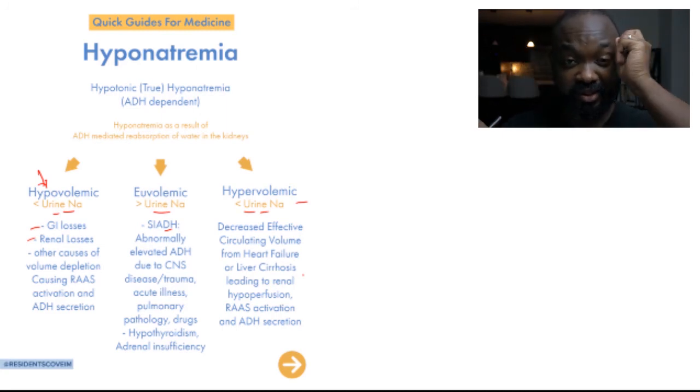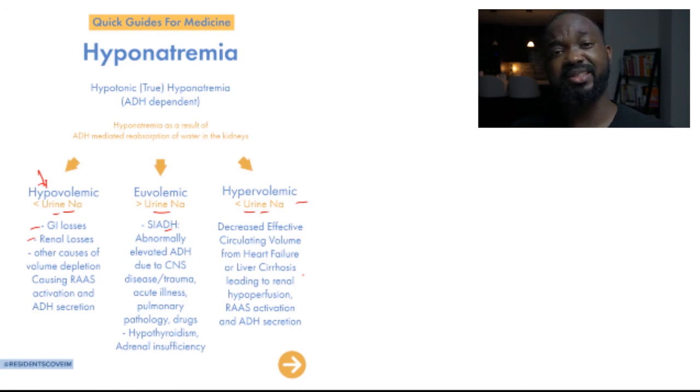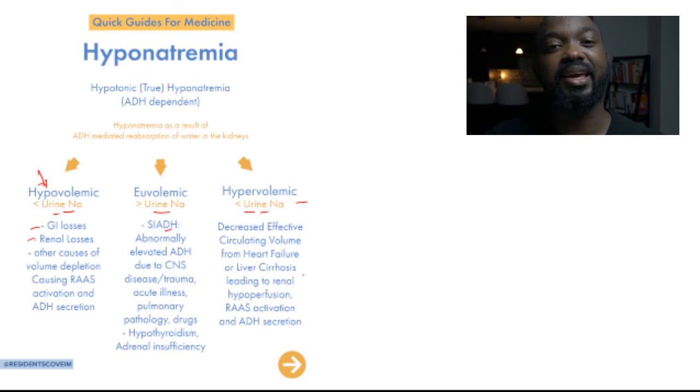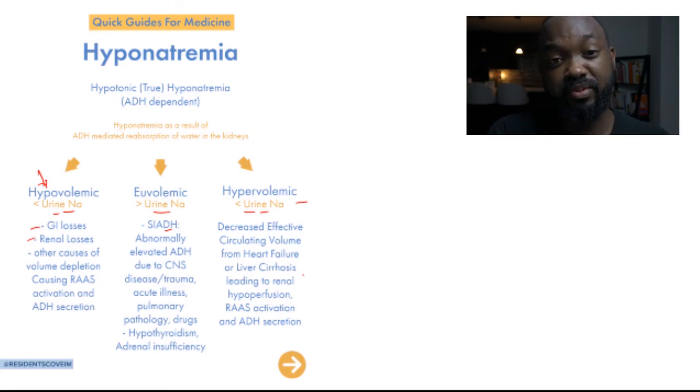The main thing happening with either of these two situations is that you have activation of the renin-angiotensin system. When you have the activation of the renin-angiotensin system from hypovolemia, because there's renal hypoperfusion, that causes increased ADH through all of the cascade, and that's what causes the hyponatremia.